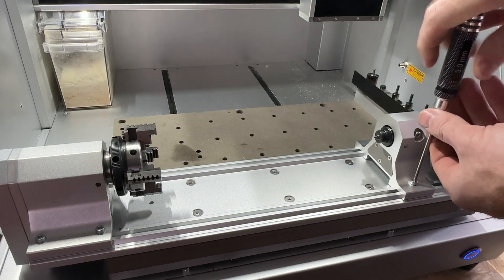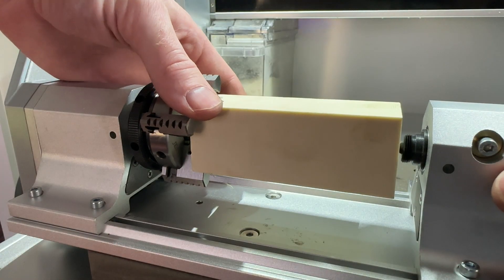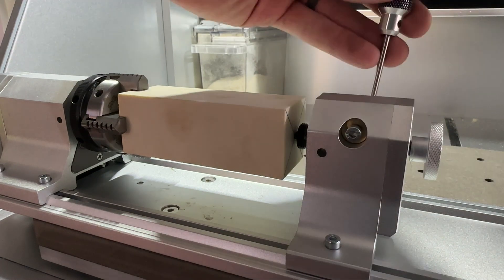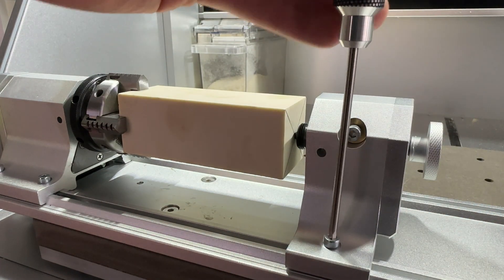We also need to loosen the set screws on our tail stock so we can then slide it so it makes contact with the center hole we drilled into our stock. Tighten these two set screws for the rail of our tail stock so it cannot move away from our part.